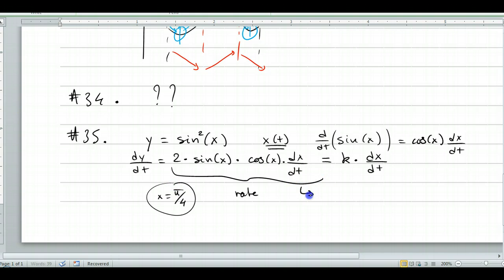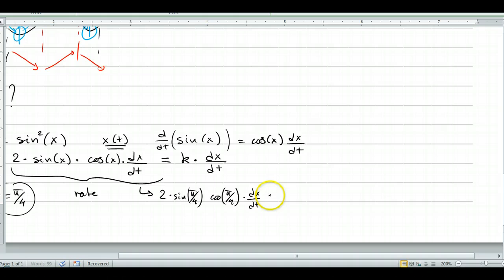And I'm at x equals pi over 4. So what do we have right here? We have 2 sine pi over 4 cosine pi over 4 dx dt equals k times dx dt. Now of course this is not a function of dx dt. So that goes away, right? Goes away. So what do we have? So we have 2, 1 over root 2 times 1 over root 2 equals k. This is 1 half right here, right? So 2 times 1 half equals k. k equals 1, which is C.